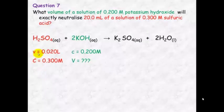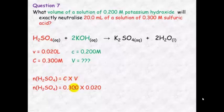Again we have got the C and the V of the known substance so we can calculate the number of mole. Number of mole equals concentration times volume. So that equals 6.00 by 10 to the negative 3 mole.